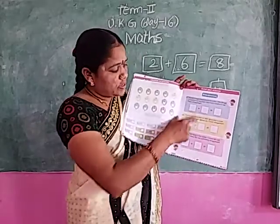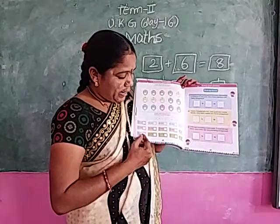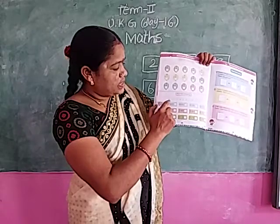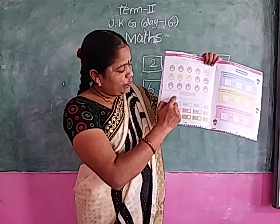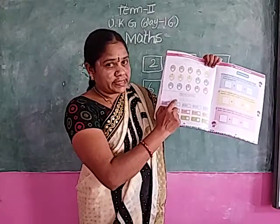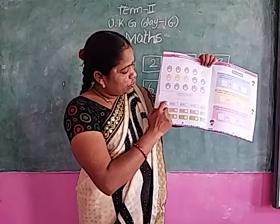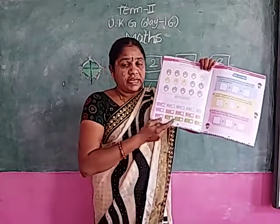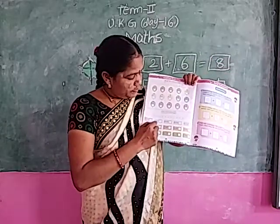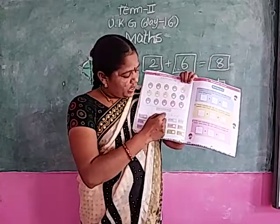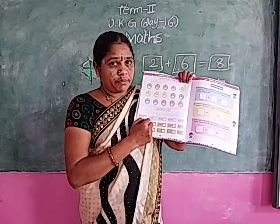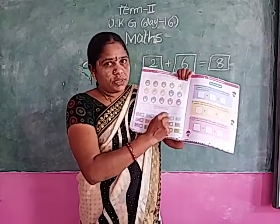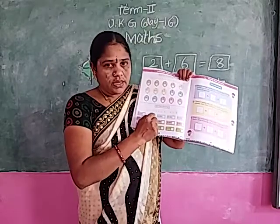Page number 49. Complete this work. Additions: 1 plus 1 — circle the 1 on the number line, move forward 1 time. What is the answer? 2. Write down 2. Next: 6 plus 2 — which is the greater number? 6. Circle the 6. Which is the smaller number? 2. Move forward 2 times. Where are you? 8. Write the answer: 8.